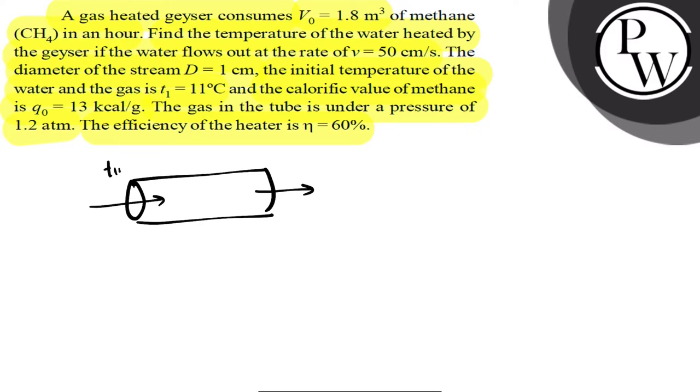In temperature that is 11°C and out 50 cm per second, 0.5 m per second. You can write it, right? And here the diameter is 1 cm. Okay?